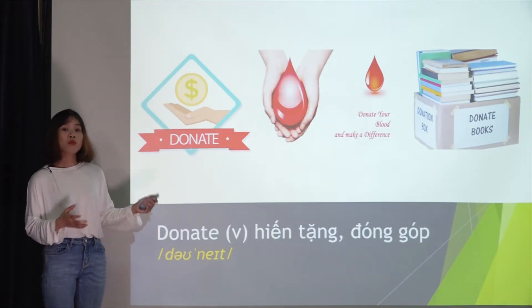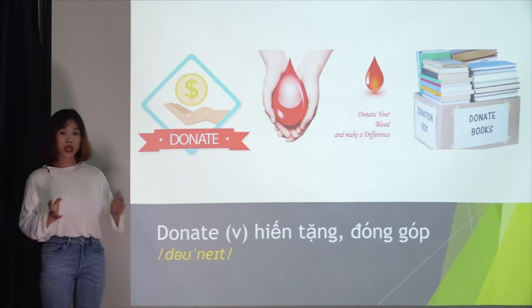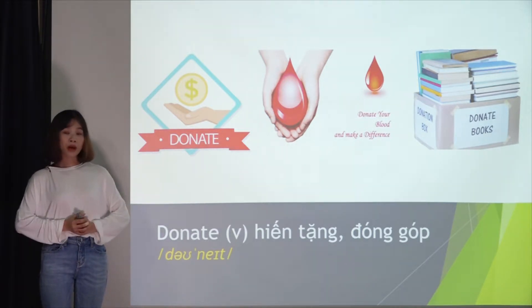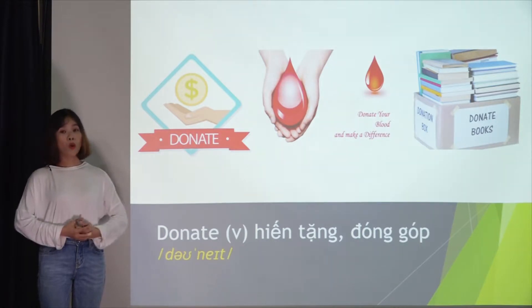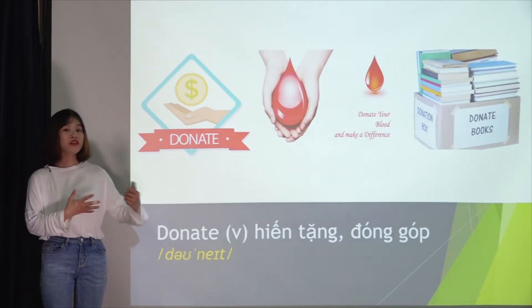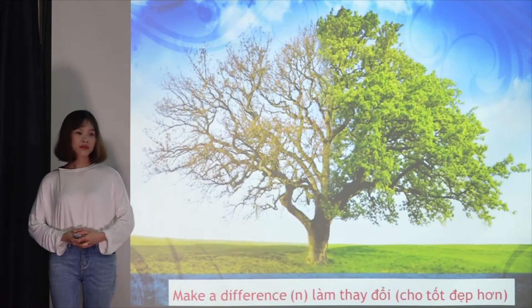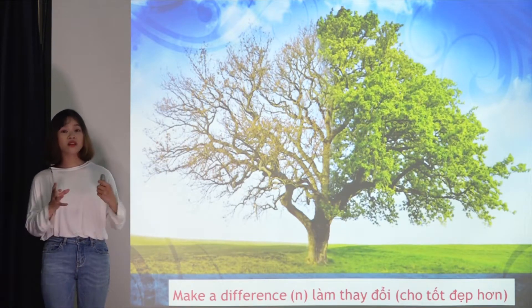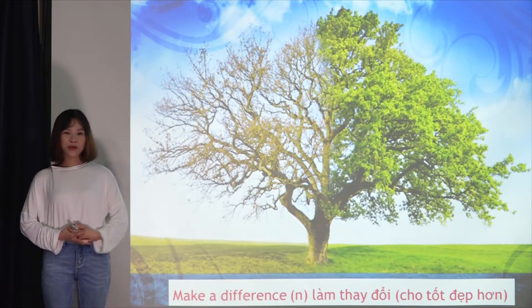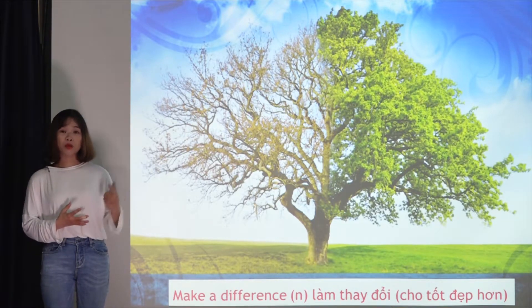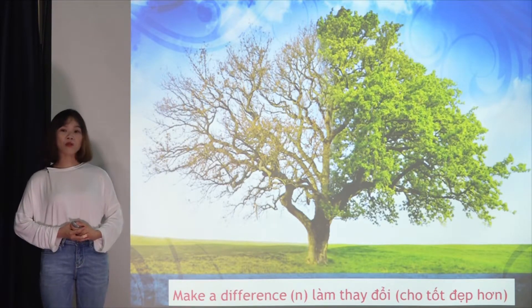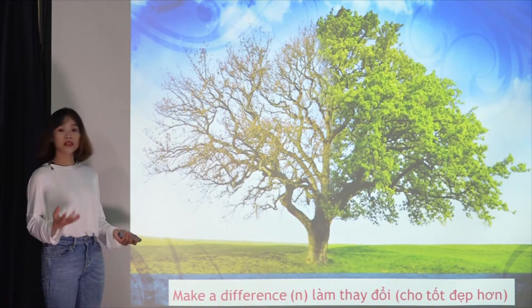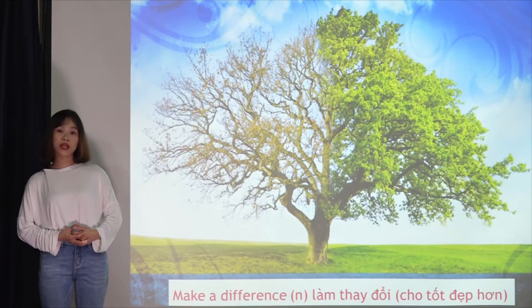Or we can donate blood, for those who meet health and weight requirements. Or more simply, you can also donate books that we've already studied, or old sets of clothes - old to us but new to those in need. With just these small actions of ours, gradually - as the saying goes, one tree cannot make a forest, but three trees together make a high mountain - our actions, though small, when many people do them, will create a very big impact on our community. So the phrase we mention here is 'make a difference' - tạo nên sự thay đổi cho cộng đồng.